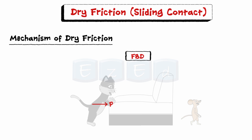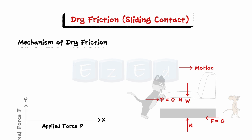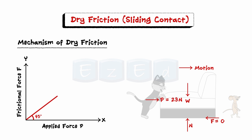The free body diagram of the sofa for any value of applied force P is shown, where the tangential friction force exerted by the plane on the block is labeled F. This friction force acting on the body will always be in a direction to oppose motion. There is a normal force N, which in this case equals W. When P is zero, equilibrium requires that there be no friction force. As P is increased, the friction force must be equal and opposite to the applied force P, as long as the sofa does not slip.